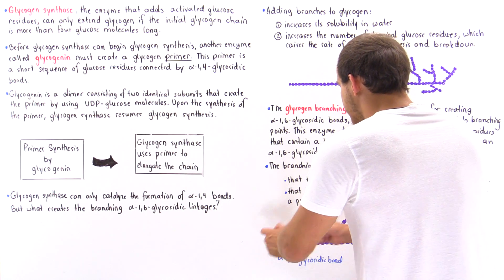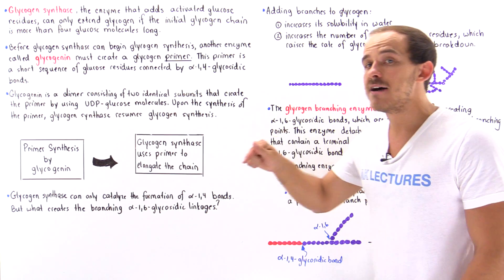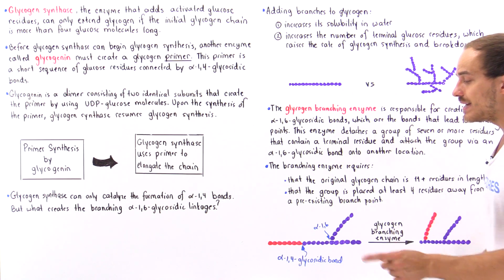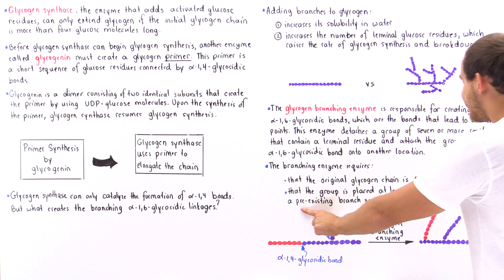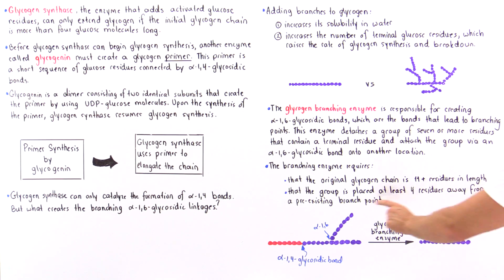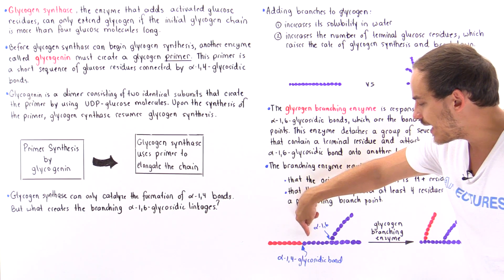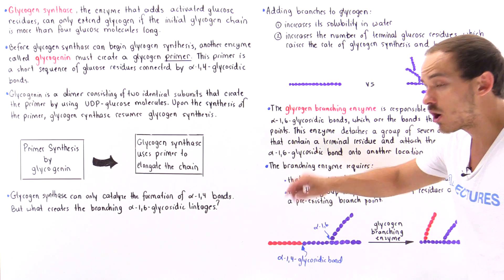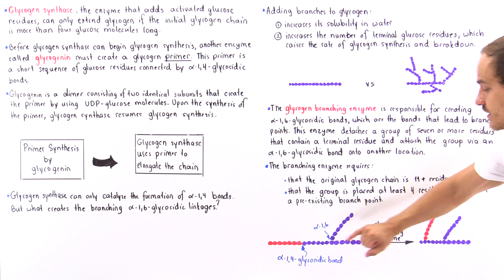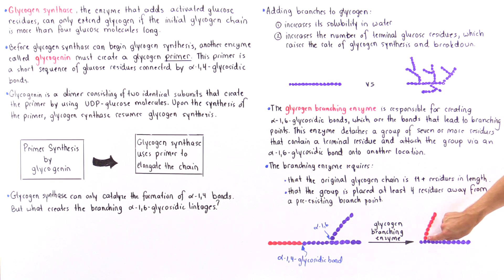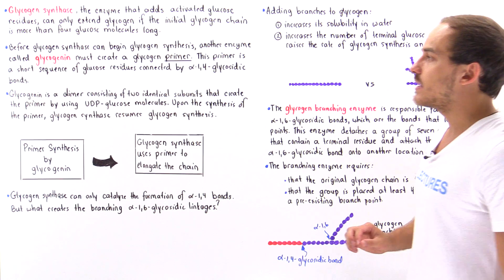Next, the enzyme attaches that segment via an alpha-1,6-glycosidic bond somewhere along the chain, but it must be placed at least four residues away from the pre-existing branch. Counting one, two, three, four — it creates the new branch on the fifth residue. This is where we can hypothetically place that branching point, giving us a second alpha-1,6-glycosidic bond. This is the process by which our cells are capable of synthesizing glycogen molecules.